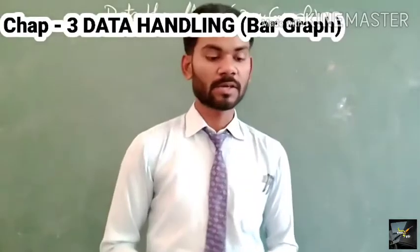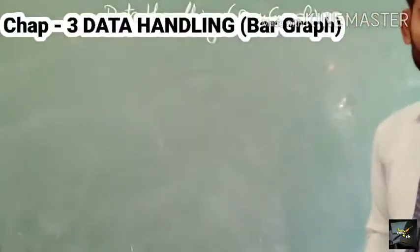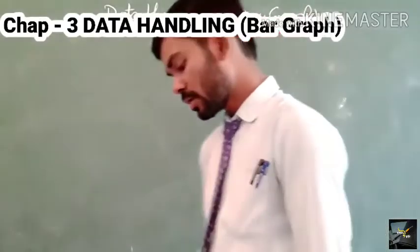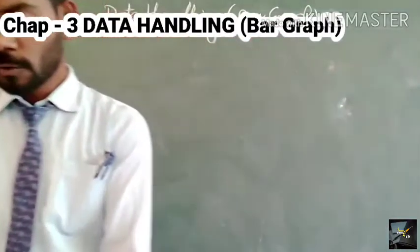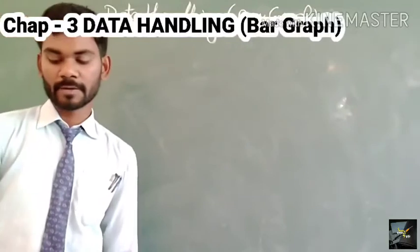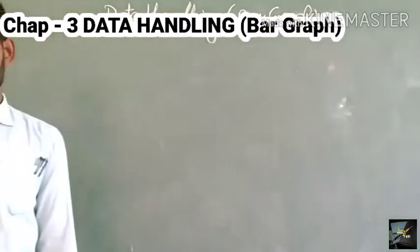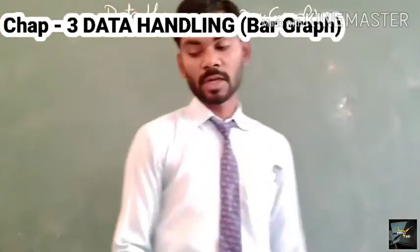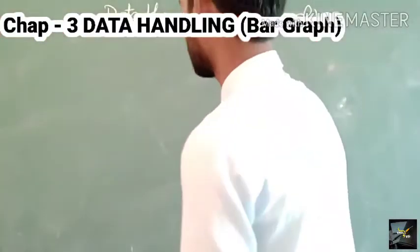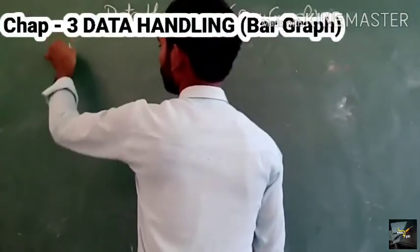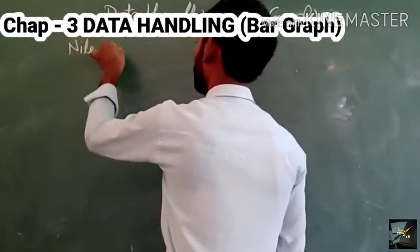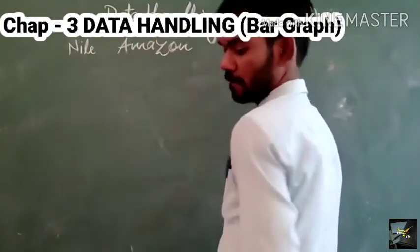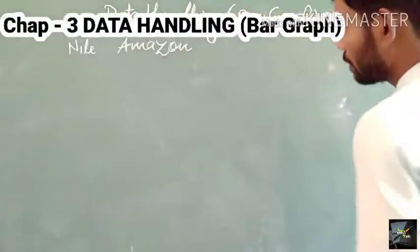So today we shall see some questions based on the same topic. The question says: make a bar graph to compare the length of some of the world's largest rivers. Their approximate lengths in kilometers are given. The rivers listed include Nile, Amazon, and Brahmaputra.